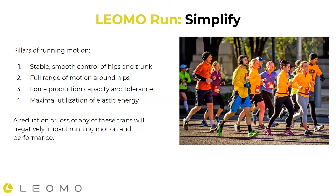What constitutes good running form? An individual's efficiency and self-selected form can vary a lot with many interrelated factors. To set some rules that apply across individuals as goals to work towards, I use four pillars: number one, a stable, smooth control of the hips and trunk or center of mass; number two, a full range of motion around the hips; number three, force production capacity and tolerance; and number four, maximal utilization of elastic energy. A reduction or loss in any of those traits will negatively impact running motion and performance.